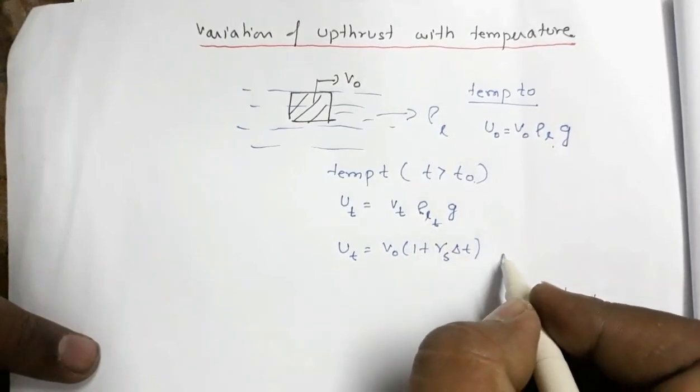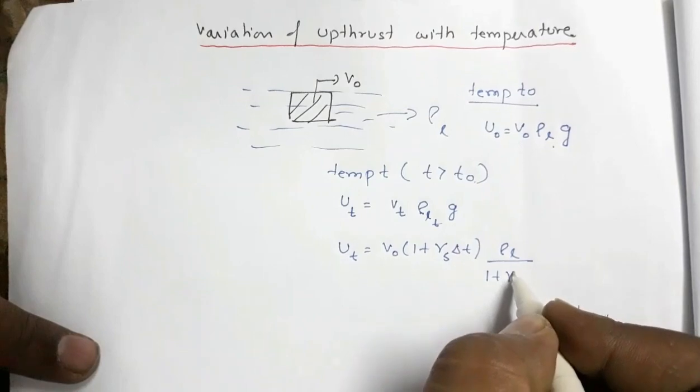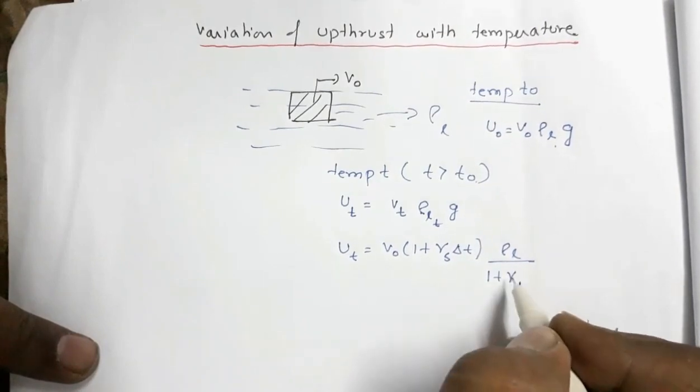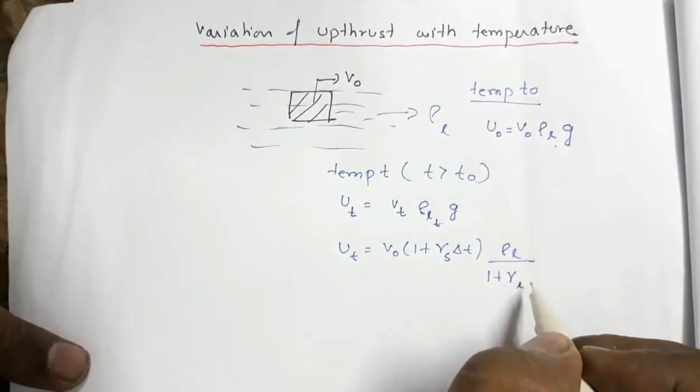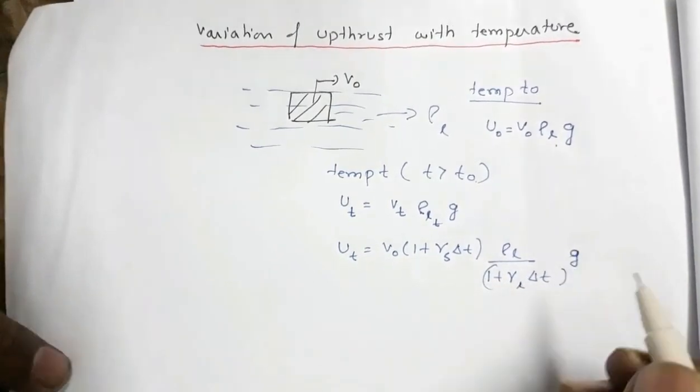Now what is this ρLT? It is ρL divided by 1 plus γ of the liquid, coefficient of volume expansion of the liquid, delta T multiplied by G.